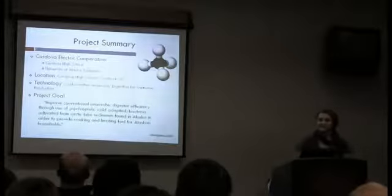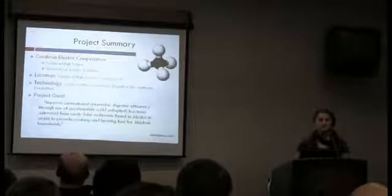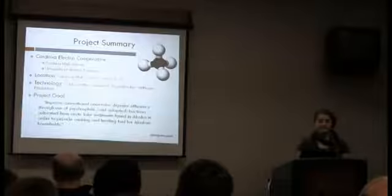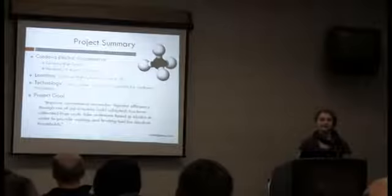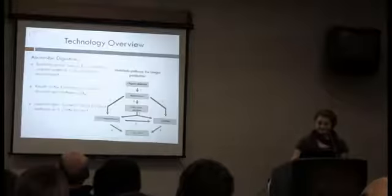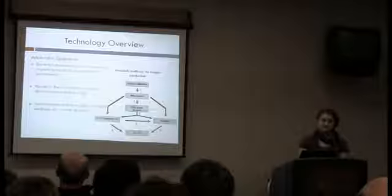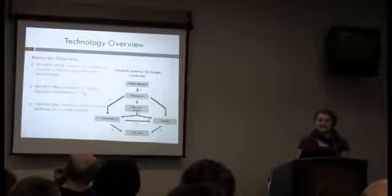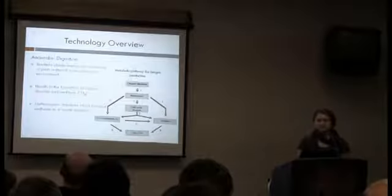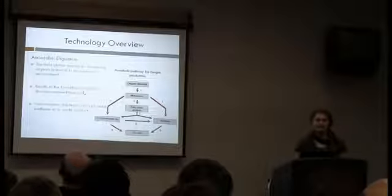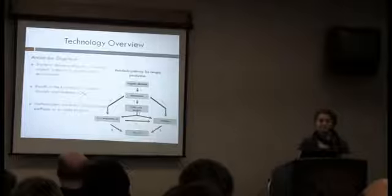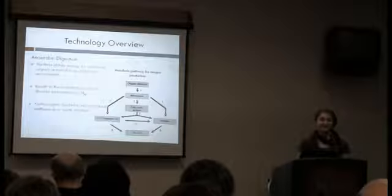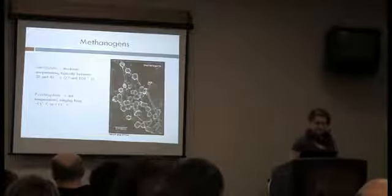So basically, what our project is about is bringing these methane digesters into the colder regions, such as Alaska. These have been working all over the warm areas, and we're just trying to figure out how we can make it a viable solution for Alaska. So how it works is there's a bacteria called methanogens, and it produces methane as a waste product. And in an anaerobic environment, which means there's no oxygen, you can add in food scraps. And it digests the food scraps and produces methane, which can be used in all sorts of technology, anything that can burn propane can burn methane. So it's a great solution.